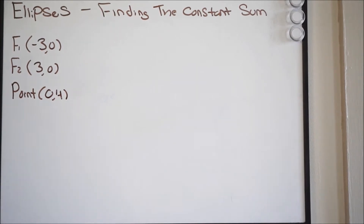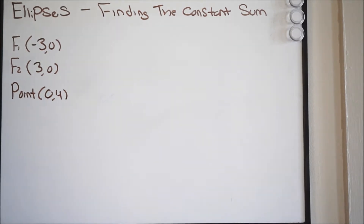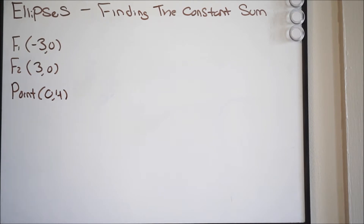Today we're going to be talking about how you can find the constant sum of an ellipse. Before we do this, we first have to understand some terminology — that's going to be a focus, or foci. When you're dealing with an ellipse, whether it be vertical or horizontal, you're going to have something called foci, and there are two of them — two points on the ellipse that occur on the major axis.